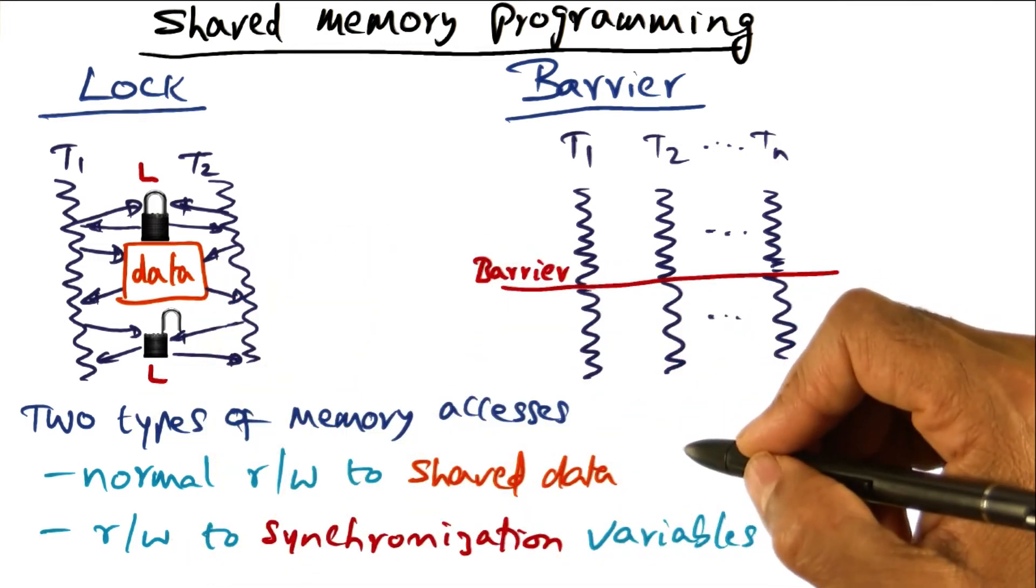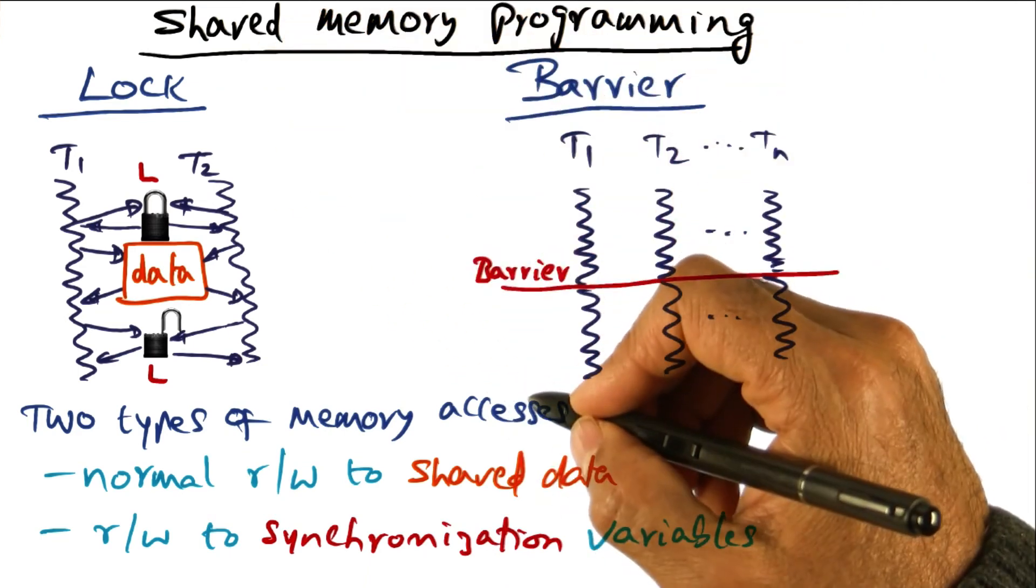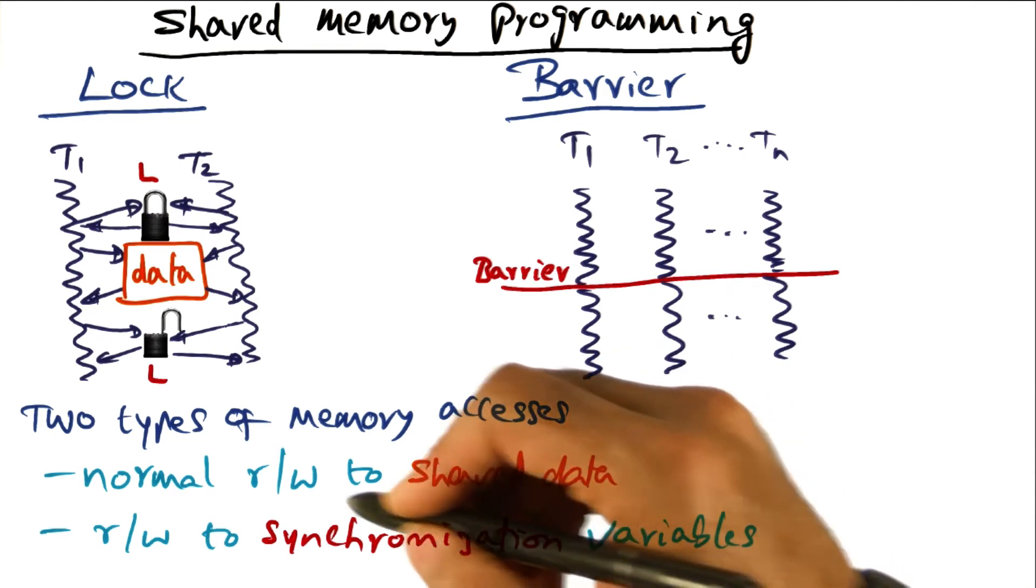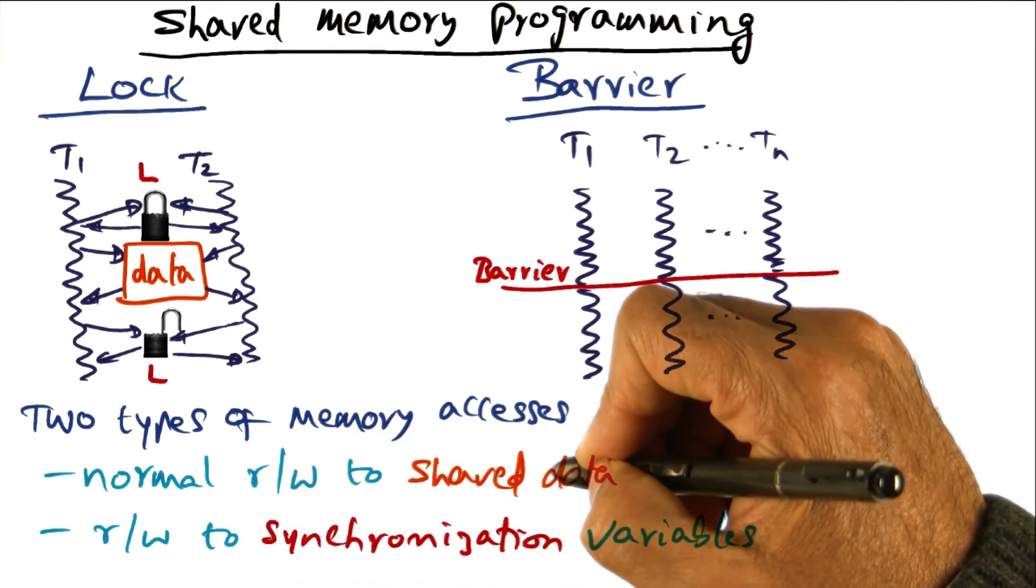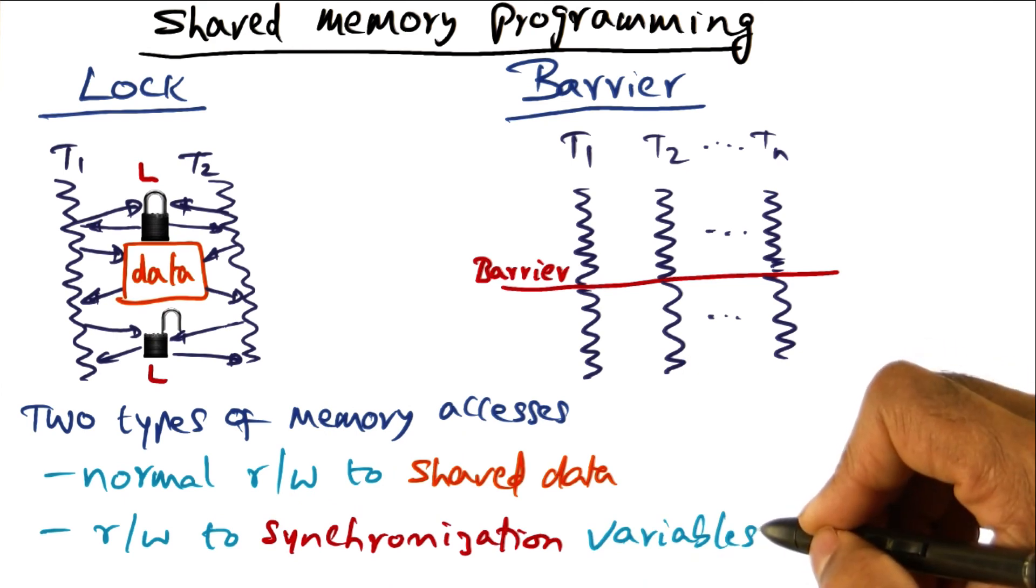So there are two types of shared memory accesses going on in the execution of a parallel program. One is access to normal shared data and the other is access to synchronization variables.